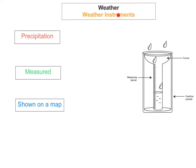The second weather instrument we're going to look at is how to measure precipitation. Precipitation is rainfall, and it is measured by a rain gauge. Basically, you put a funnel out and the rain falls from the sky, is collected into the funnel and then into a beaker. You can then measure the amount of rainfall that fell over a particular period of time, usually one day. It's measured in millimetres.